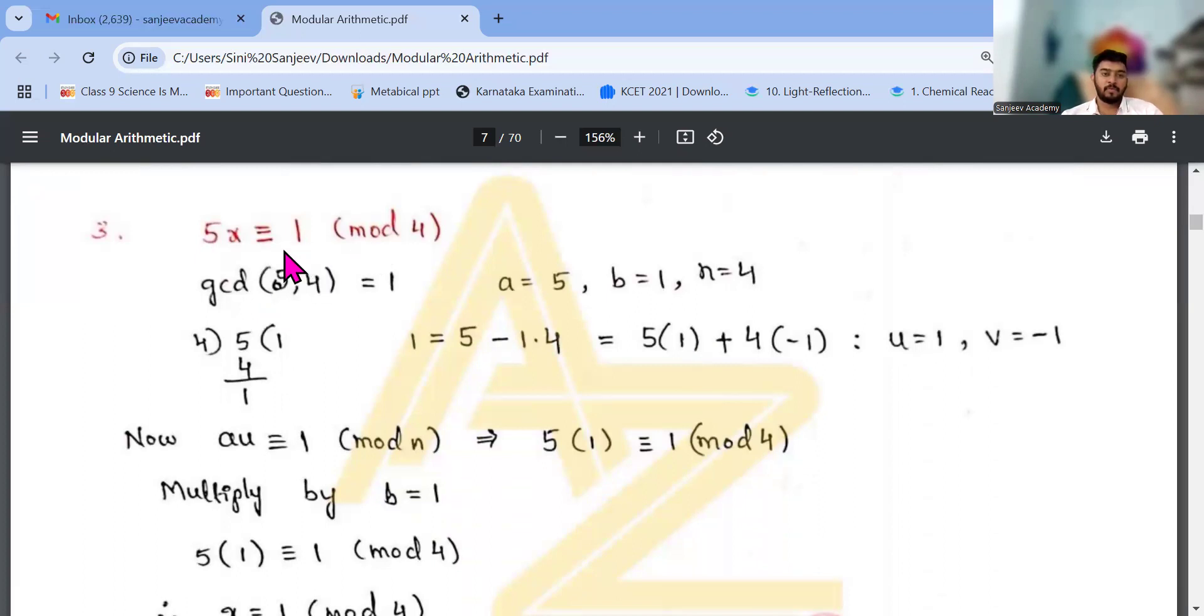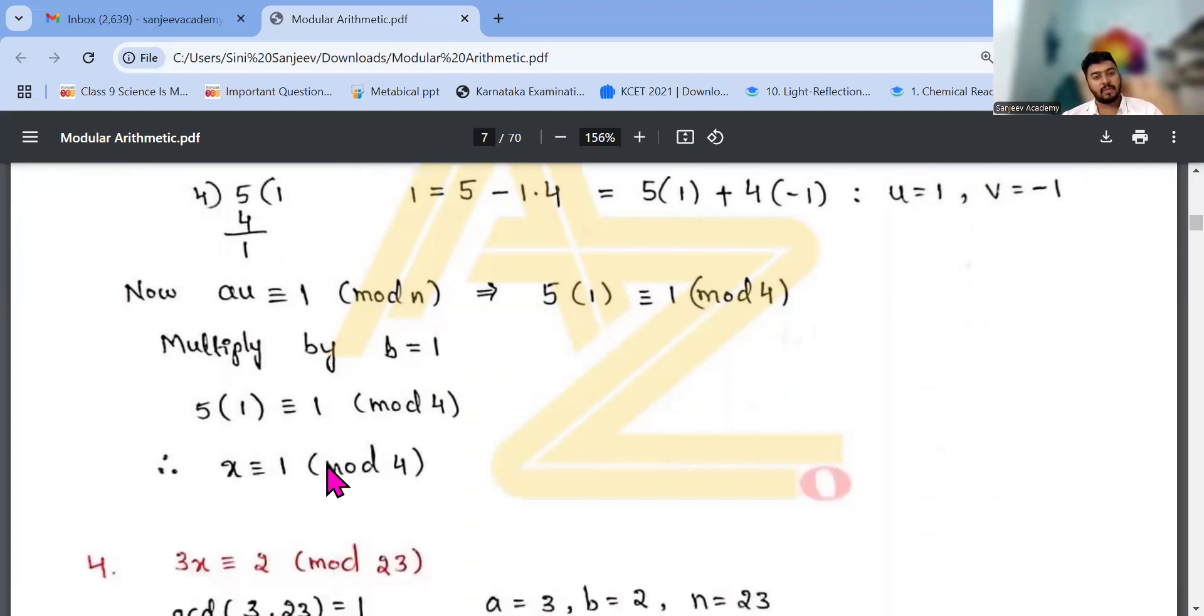5x congruent to 1 mod 4. gcd of 5, 4 equals 1. a equals 5, b equals 1, n equals 4. Then u and v value. a congruent to 1 mod n. 5 into 1 congruent to 1 mod 4. Multiply by b equals 1. 5x congruent to 1 mod 4. x congruent to 1 mod 4.